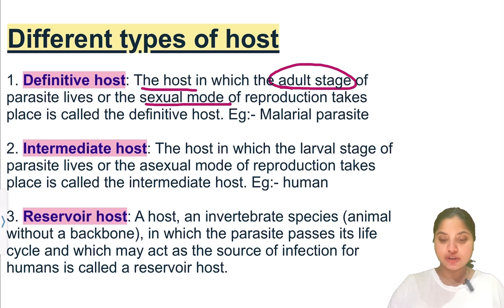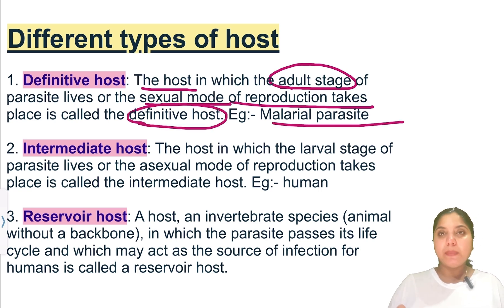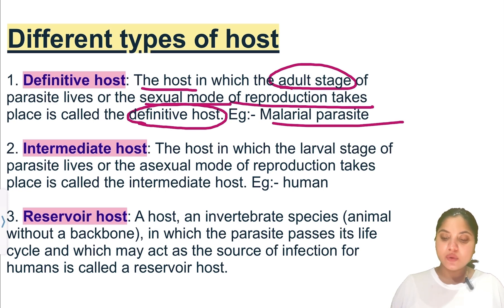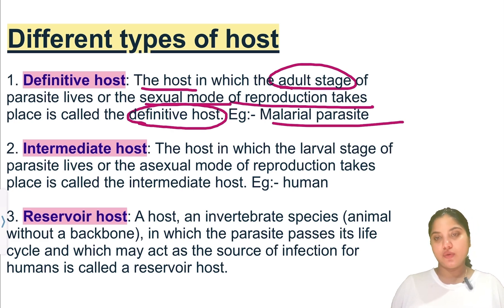Sexual reproduction occurs in the definitive host because the parasite is in its adult stage. That host is known as the definitive host. An example is the malarial parasite. The second host is the intermediate host — the host in which the larval stage of the parasite lives, or the asexual mode of reproduction takes place. For example, the human being.